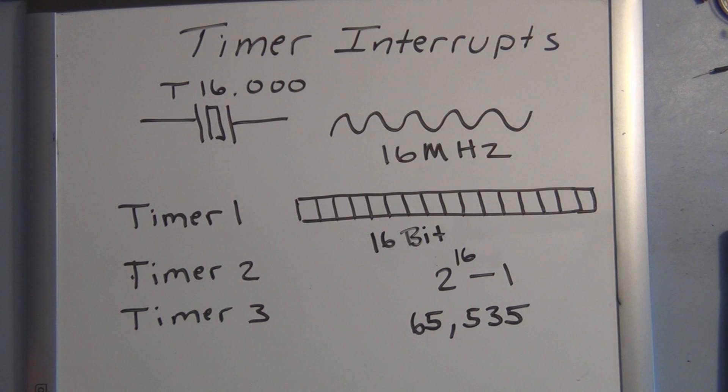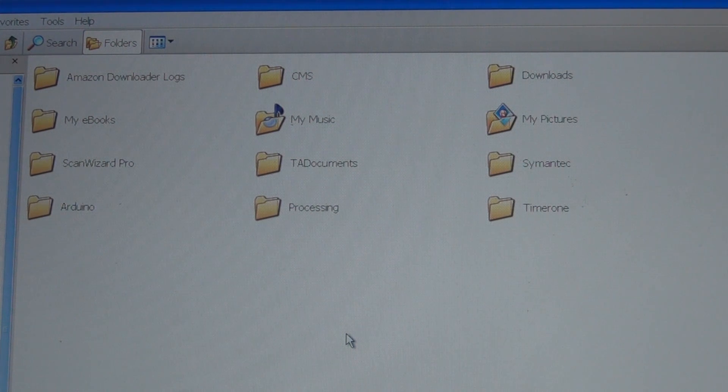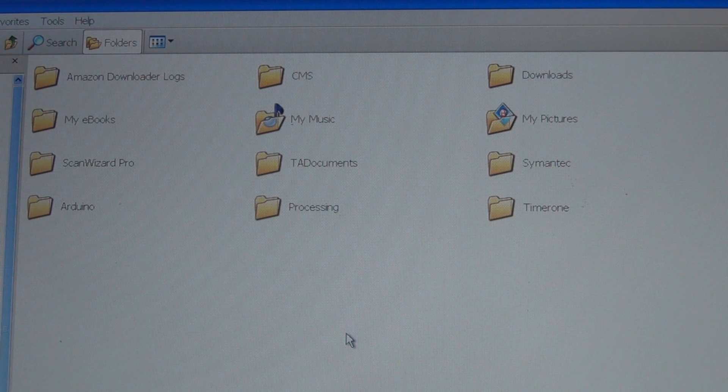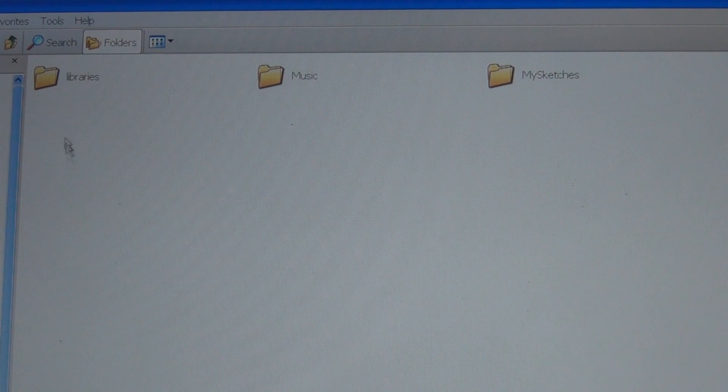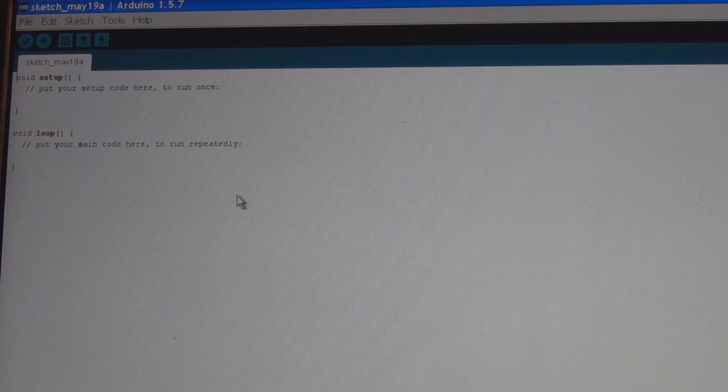So this library is called Timer One. This library, someone has already gone ahead and done all the hard work, so you just need to install this library into your Arduino IDE and then it allows you to use timer interrupts and use this register. I'll put a link in the description directing you to the Timer One file that you need to download and unzip, and then copy that folder into your Arduino library folder.